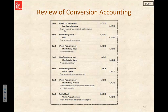We could record our indirect labor, which would be a debit to manufacturing overhead, credit to manufacturing wages. We could record our manufacturing overhead costs — debit to manufacturing overhead, credit to utility payable. We could allocate manufacturing overhead to work in process at 125% of direct labor, which would be a debit to work in process inventory and credit to manufacturing overhead.